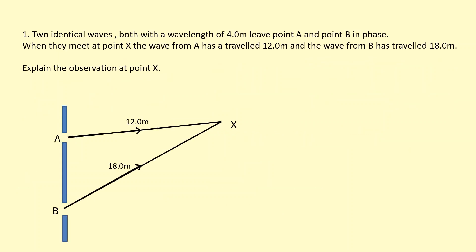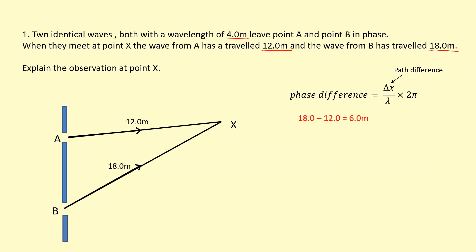We have two identical waves, both with a wavelength of 4 meters, leaving points A and B in phase. When they meet at point X, the wave from A has traveled 12 meters and the wave from B has traveled 18 meters. The path difference is 18 minus 12, so the wave from B to X has traveled an extra 6 meters. Dividing by the wavelength of 4, we get 1.5 wavelengths extra.